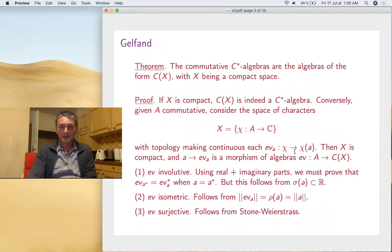Now let's prove some theorems. Gelfand's theorem says that the commutative C*-algebras are exactly those of the form C(X), with X being a compact space. If X is compact, of course C(X) is a C*-algebra. Take the sup norm and the involution, the bar everywhere. That's your structure.